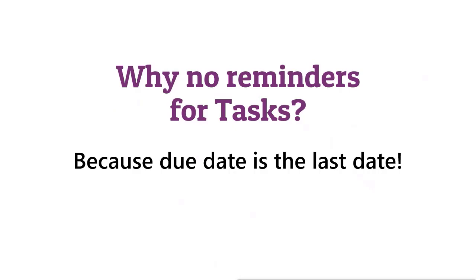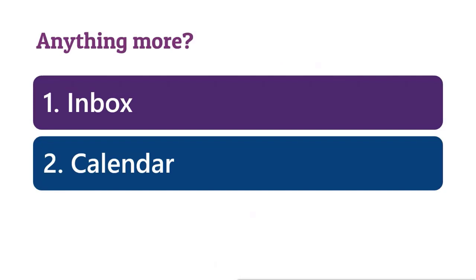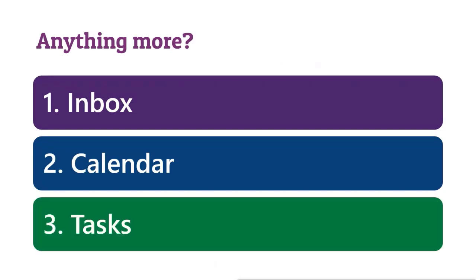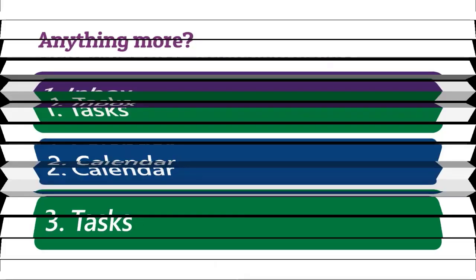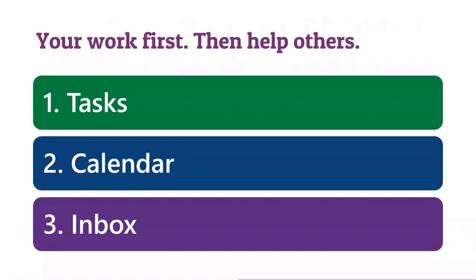Now that tasks have become important in your life, you want them to be visible to you all the time. When you go to inbox and calendar, you have to remember there's one more folder you've never looked at, but which has now become important. Inbox can have your work or others' work. Calendar can have your work or others' work. Tasks are 100% my work. So change your mindset: Task is the most important folder in your life. The folder was always there, but you never looked at it. When your mindset changes — that's called digital transformation.